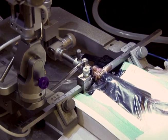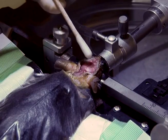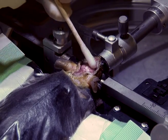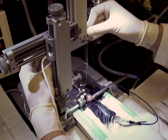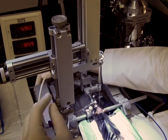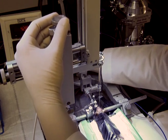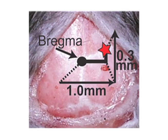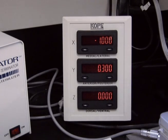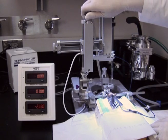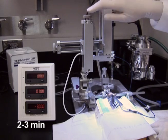To administer an intracerebroventricular bolus, a scalp incision is made as before and the skull of the animal is wiped clean and treated with hydrogen peroxide. Then, move the syringe with drug into place. Orient the beveled portion of the needle towards the posterior and secure into place. Lower the needle until it touches bregma. Zero all of the coordinates and then move the needle laterally to the right 1.0 mm and anterior 0.3 mm. Slowly, drive the needle through the skull until the top of the needle bevel is flush with the top of the skull. This can be done due to the thinness of the mouse skull. Zero the z-coordinate and lower the needle to minus 3.0 mm at a rate of 1 mm per second. Wait 2 to 3 minutes for the brain to seal around the needle.